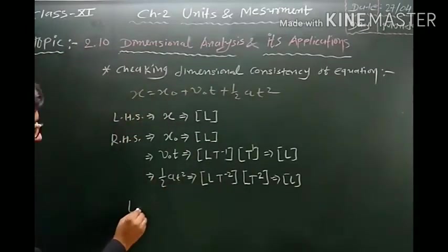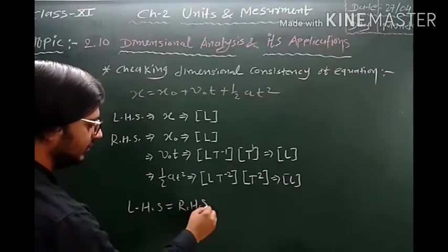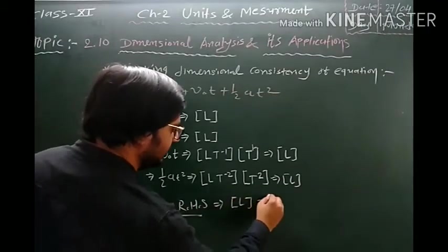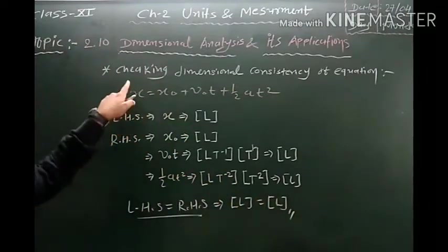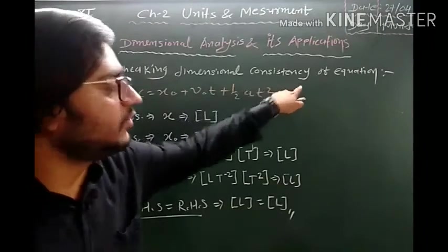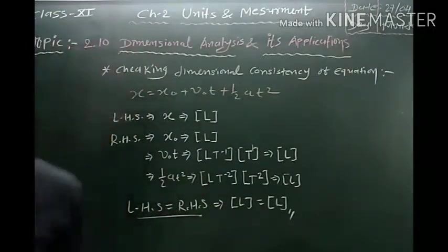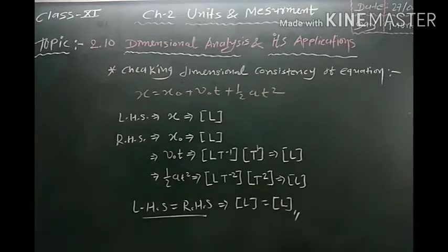From both sides, LHS equals RHS because we get the same dimension L on both sides. We can conclude that the dimensional consistency of this equation is correct. Now write down this example. We will take another example — it is page number 33, example 2.15.